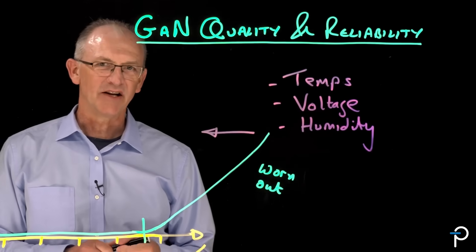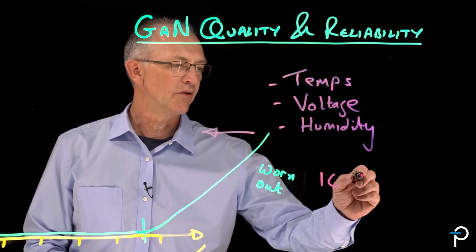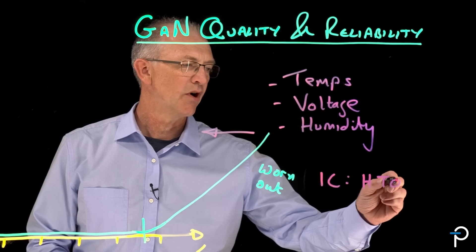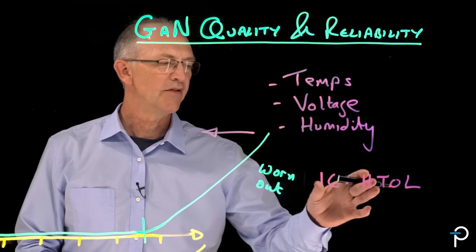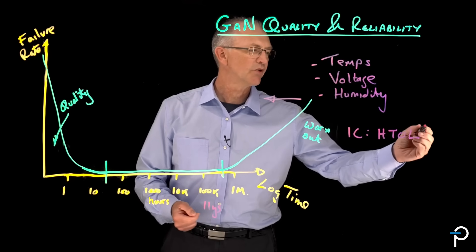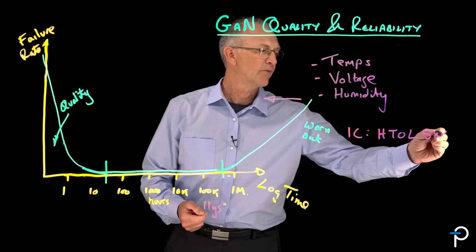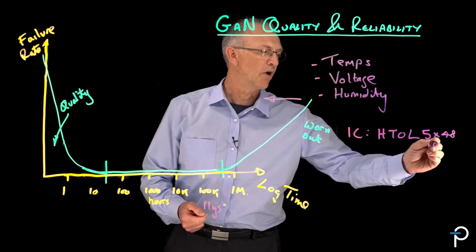So to accelerate time at the IC level, we run a test called High Temperature Op Life. And this test is designed to run a relatively small number of parts, but five lots times 48 parts for 1,000 hours.